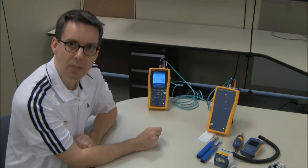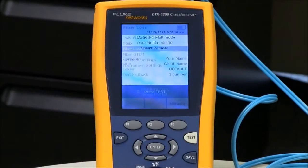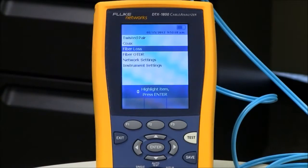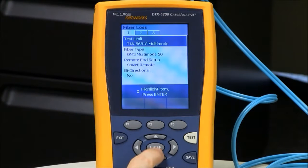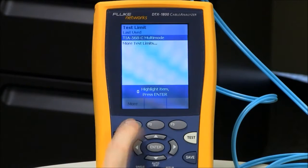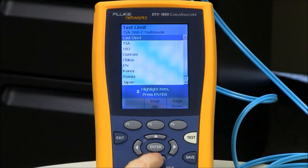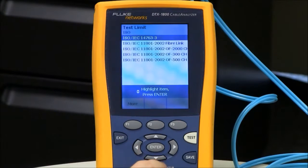Let's talk about setting up the DTX cable analyzer. I'm going to rotate the dial disk setup, and with fiber loss highlighted, I'm going to hit the enter key. My test limit is currently set to TIA. If I wanted to change that to ISO, I would hit the enter key, F1 more, and go down to ISO, where I see the 14763-3 standard.